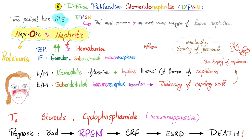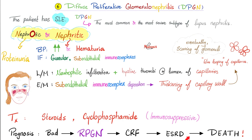Now, diffuse proliferative glomerulonephritis — the patient has lupus. It is the most common and most severe subtype of lupus nephritis. It has nephrotic and nephritic features; the patient is losing protein and blood in the urine, and blood pressure is usually high. On immunofluorescence, you see granular subendothelial immune complexes. On light microscopy: tons of neutrophils, hyaline thrombi, and the capillaries look like a wire loop. Eventually, this will lead to scarring of the glomeruli.